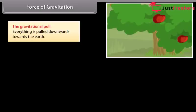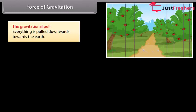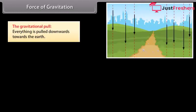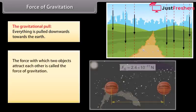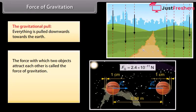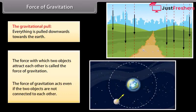Force of gravitation: The gravitational pull acts on everything, pulling it downwards towards the earth. The force with which two objects attract each other is called force of gravitation. The force of gravitation acts even if the two objects are not connected to each other.